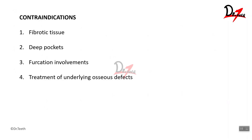Curettage is contraindicated in fibrotic pockets, since gingival curettage is only done to remove inflamed areas and fibrotic tissues will not have inflamed areas. It is contraindicated in deep pockets, where a curette cannot reach the base of the pocket — a flap is preferred. It is also contraindicated in furcation involvement and furcation defects, as the curette can tear tissue near the furcation area. It is contraindicated in underlying osseous defects, where osteotomy, osseous surgery, or regenerative surgery is the treatment of choice.